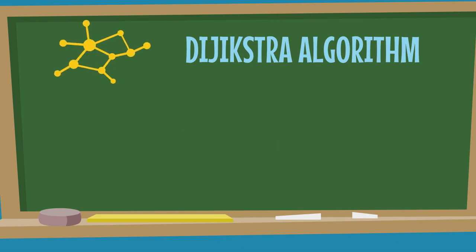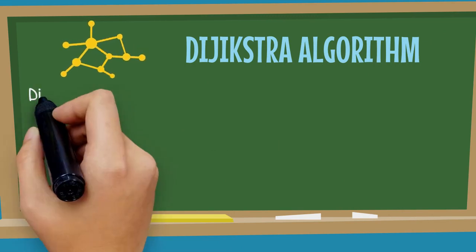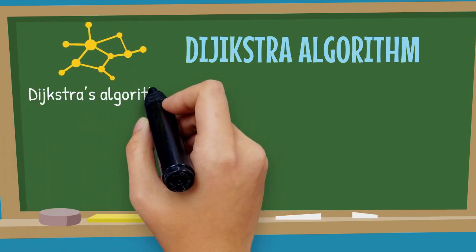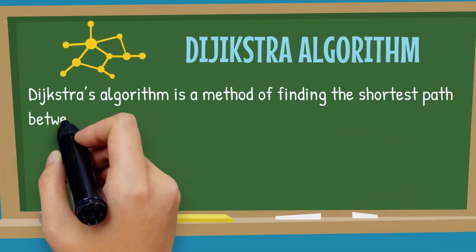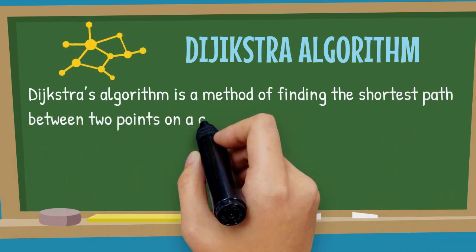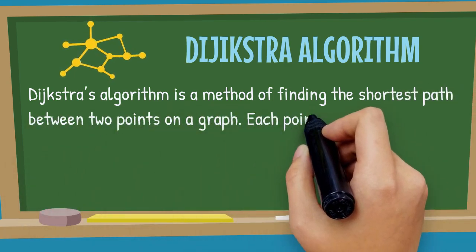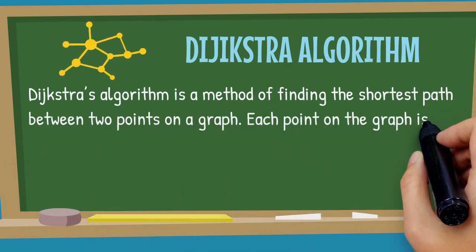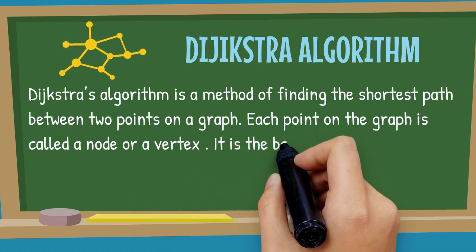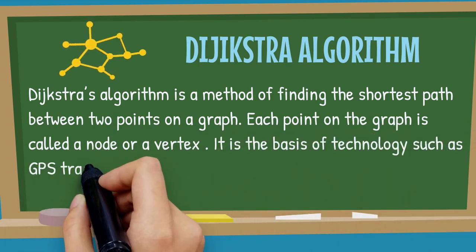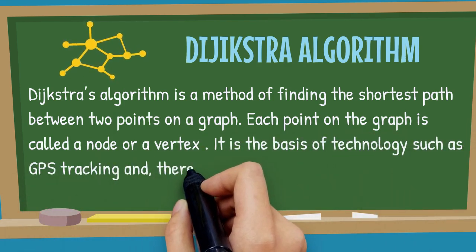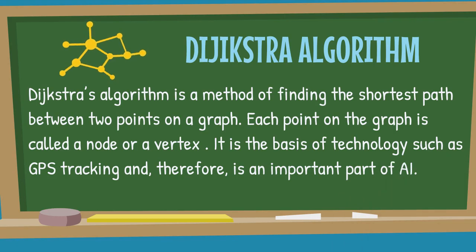Dijkstra's algorithm is a method of finding the shortest path between two points on a graph. Each point on the graph is called a node or a vertex. It is the basis of technology such as GPS tracking and, therefore, is an important part of artificial intelligence.